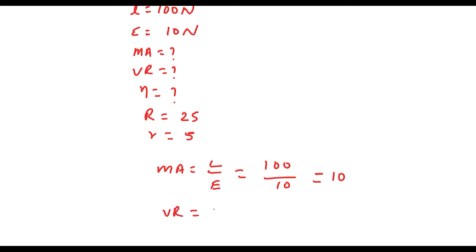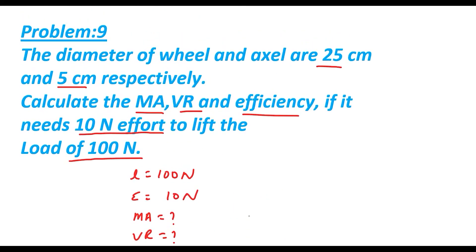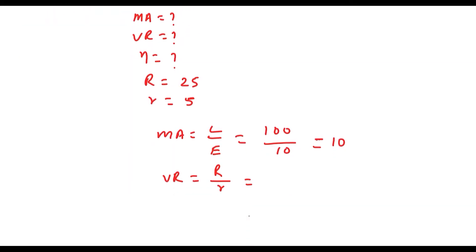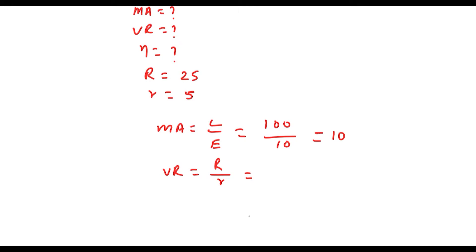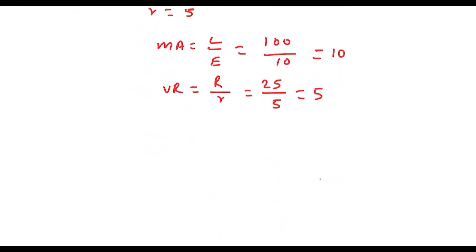VR in a wheel and axle — velocity ratio — is given by capital R divided by small r, meaning the radius or diameter of the wheel divided by the diameter of the axle. We have capital R as 25 and small r as 5, so VR becomes 5.